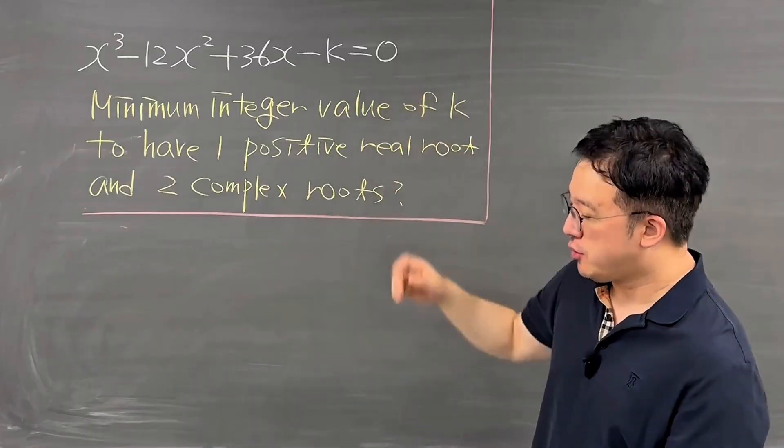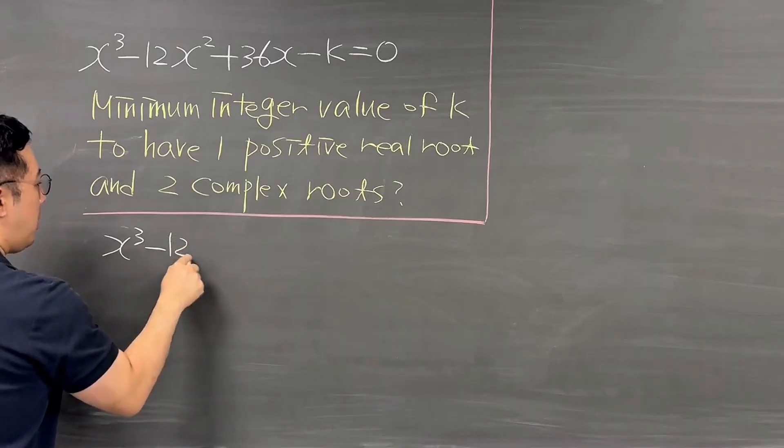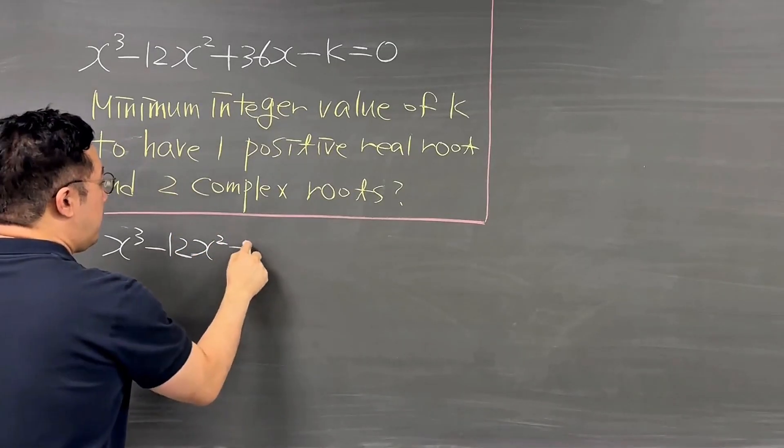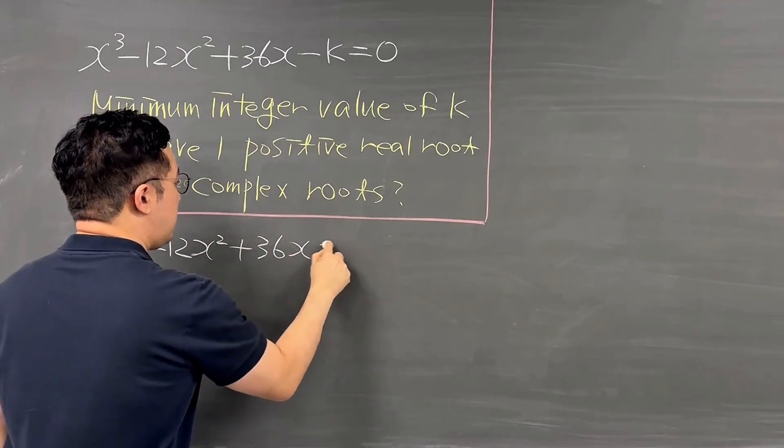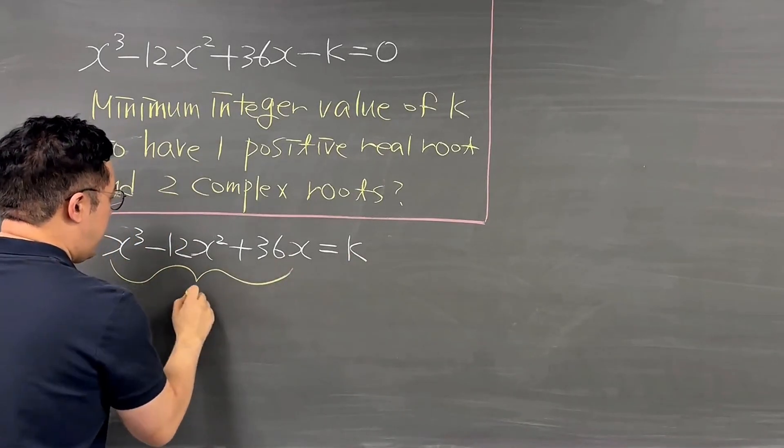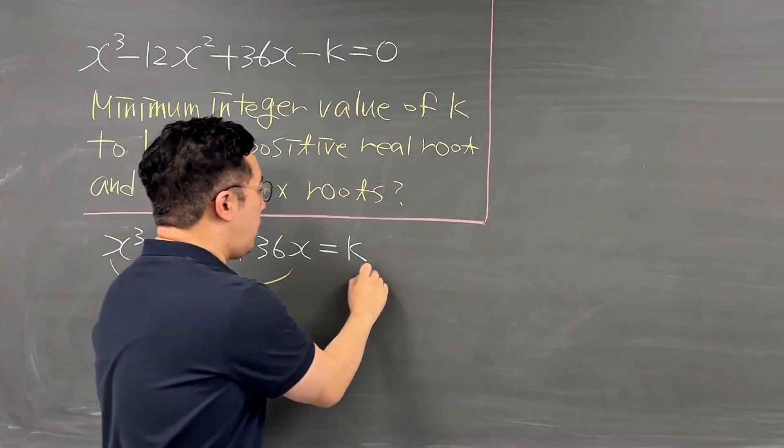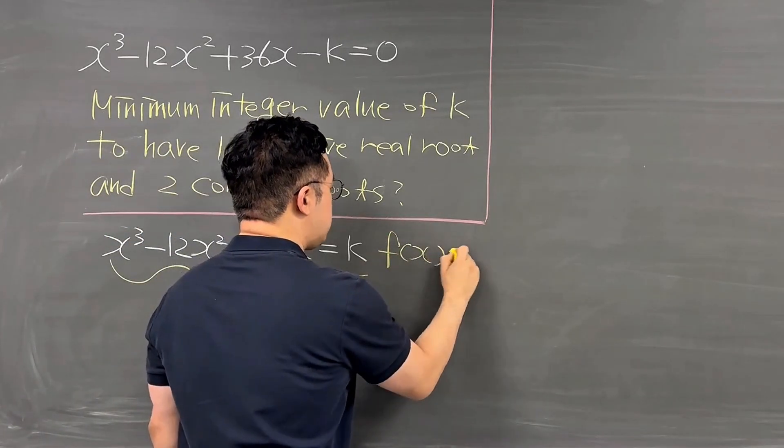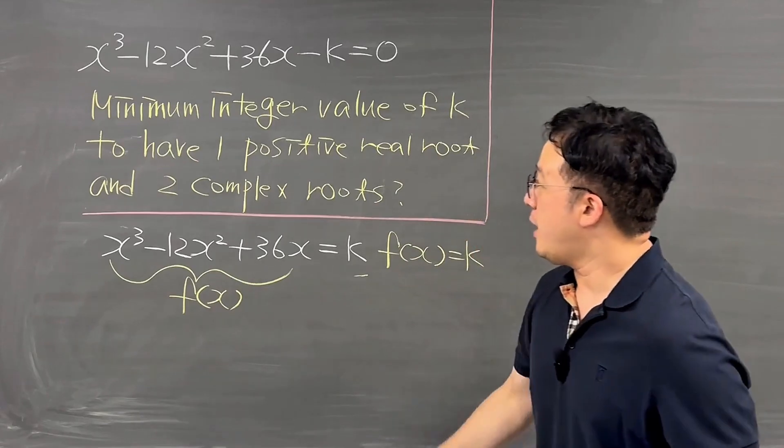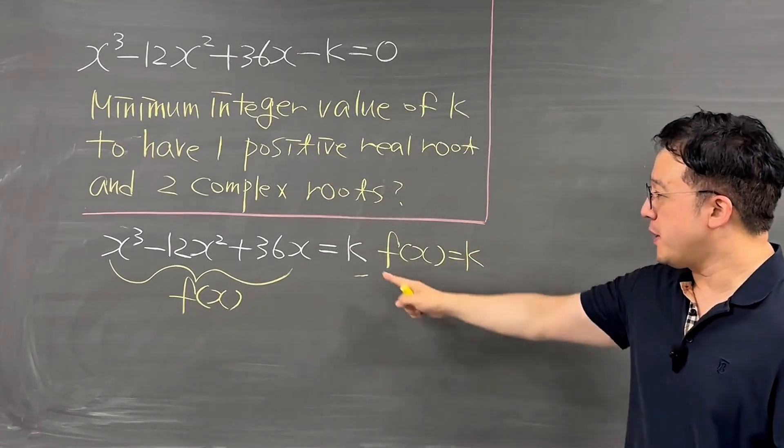Let me add k to both sides first. Let me get x³-12x²+36x. Then you see, it's equal to now k. Then let me call this cubic function part as f(x). Then we need to work on f(x) is now equal to k. To have one positive real root and two complex roots, right?